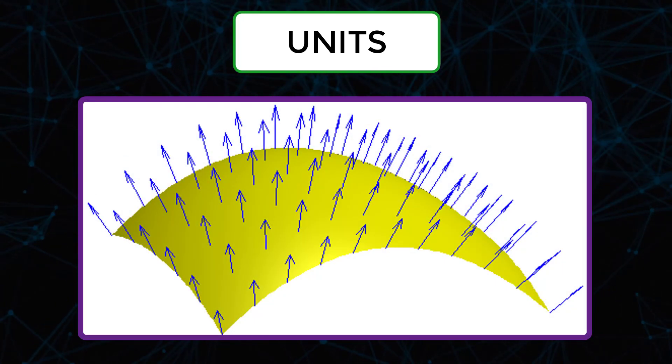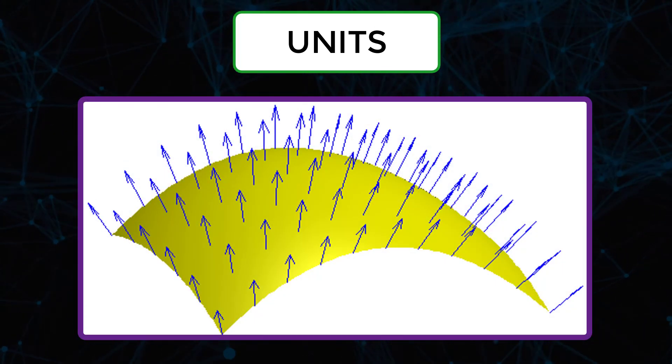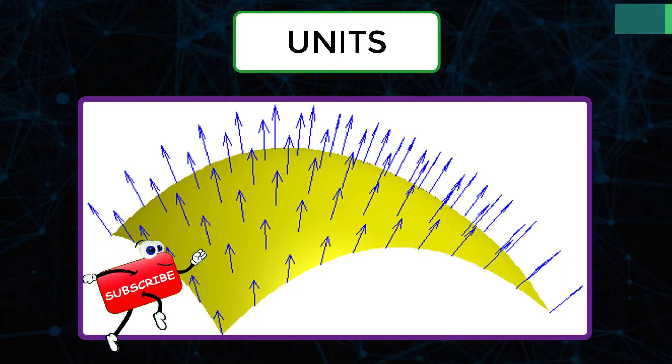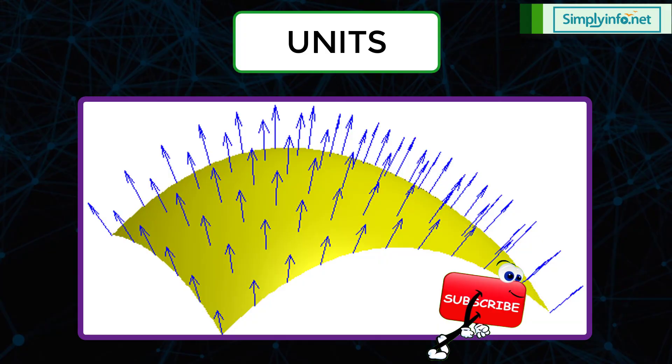Each point on a surface is associated with a direction called the surface normal. The magnetic flux through a point is then the component of the magnetic field along this direction.